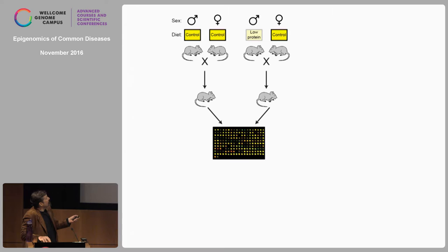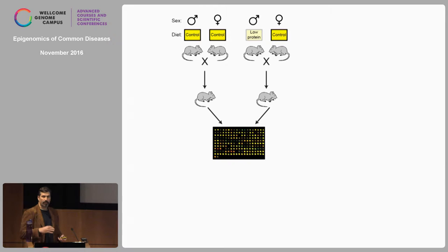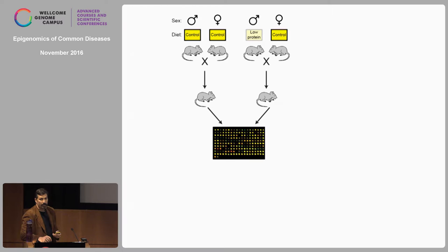We split male mice into two different conditions — primarily a dietary condition. We split siblings to control and low-protein diet, raise them to sexual maturity, mate them to control females, and take them out of the cage after a day to minimize transfer of microbiota through defecation. The females are pregnant, have children, and at three weeks of age we grind up the kids. Unlike the Weismann experiment where he measured one quantitative trait, we measure 30,000 by doing genome-wide gene expression profiling of the livers.